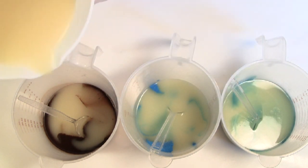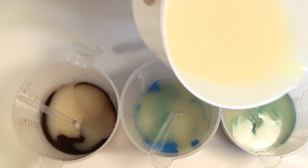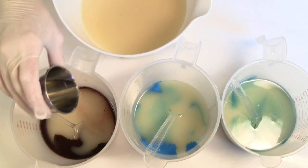My colorants have been pre-mixed with olive oil. The blue and teal are micas and the brown is unsweetened cocoa powder. I am now adding the fragrance oil.